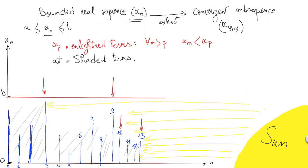Now, xp is a shaded term if there exists a term coming after p so that xm is hiding xp. For example, x2 is hidden by x3 because it is lower than x3.